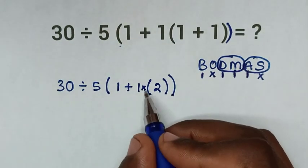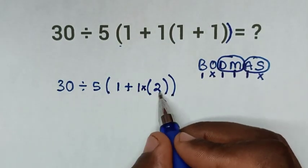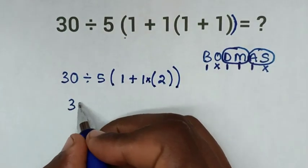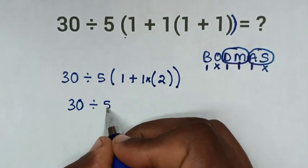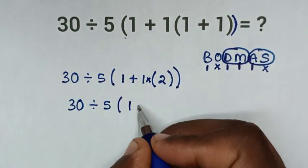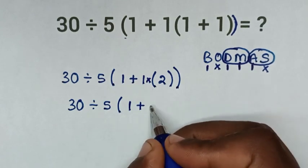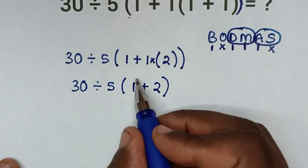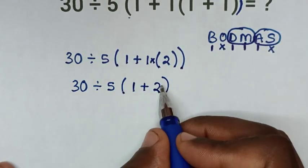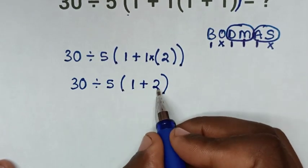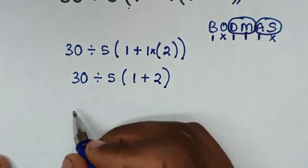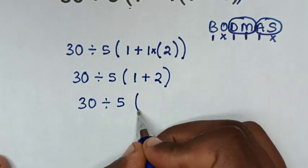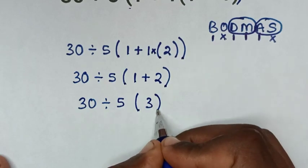So from here, this multiplication of 1 times 2 is 2. So it will be 30 divided by 5, bracket 1 plus 2 bracket. Then we'll deal with this operation inside this bracket, which is 1 plus 2 equals 3. So it will be 30 divided by 5, bracket 3.